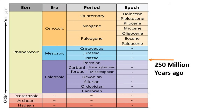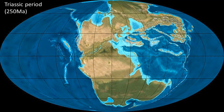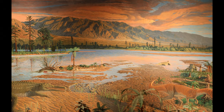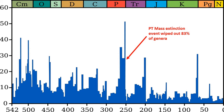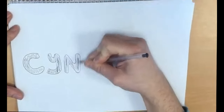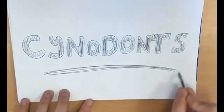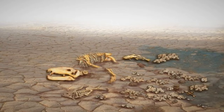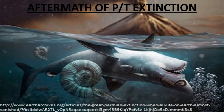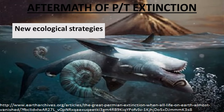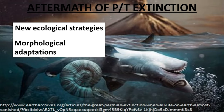Our story begins 250 million years ago in the Triassic period, in a world which was very different to the one we see today. Reptilian life dominated on land until a mass extinction event on the PT boundary took place. The Permian-Triassic mass extinction event paved the way for small creatures known as Cyanodonts to emerge, wiping out 70% of all terrestrial species on the planet. The aftermath of this mass extinction provided the evolution of new ecological strategies and morphological adaptations.